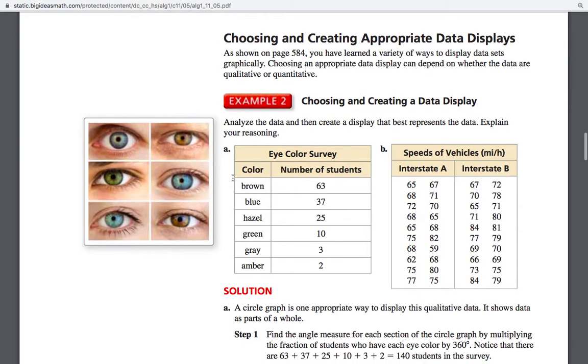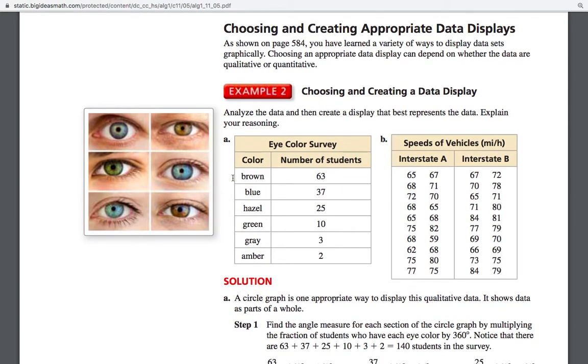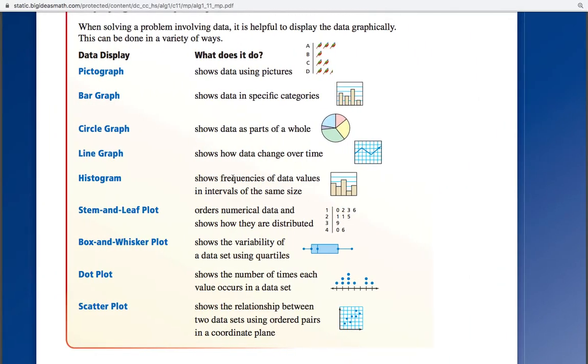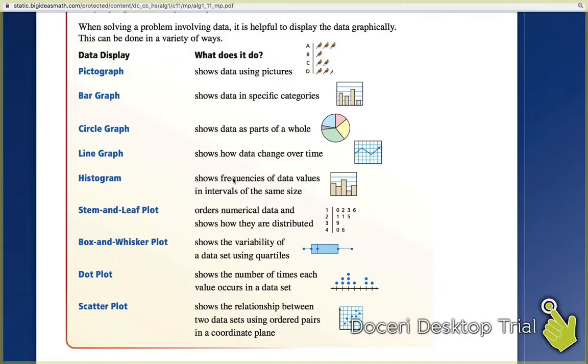The next thing, choosing and creating a data display. There are lots of different ways to display data and we see a bunch of them here. The main ones that we want to concentrate on would be bar graph, and bar graph is when we have specific categories that it's broken into. So this would be, what's your favorite color? Blue, red, green, other, that's a bar graph. A circle graph.